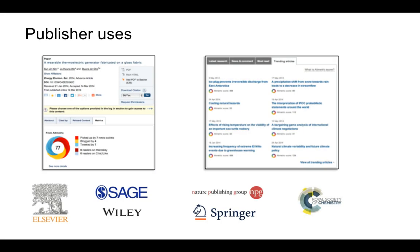For publishers, this can be useful — they can start to see where their research has been communicated. Elsevier recently bought a news communication site to also monitor this. The downside is that publishers may start to make strategic decisions about picking hot topics or things that are likely to get lots of social media coverage as opposed to those that don't, which is a concern. In this day and age, metrics are being used sometimes in ways that perhaps we may not feel entirely happy about.